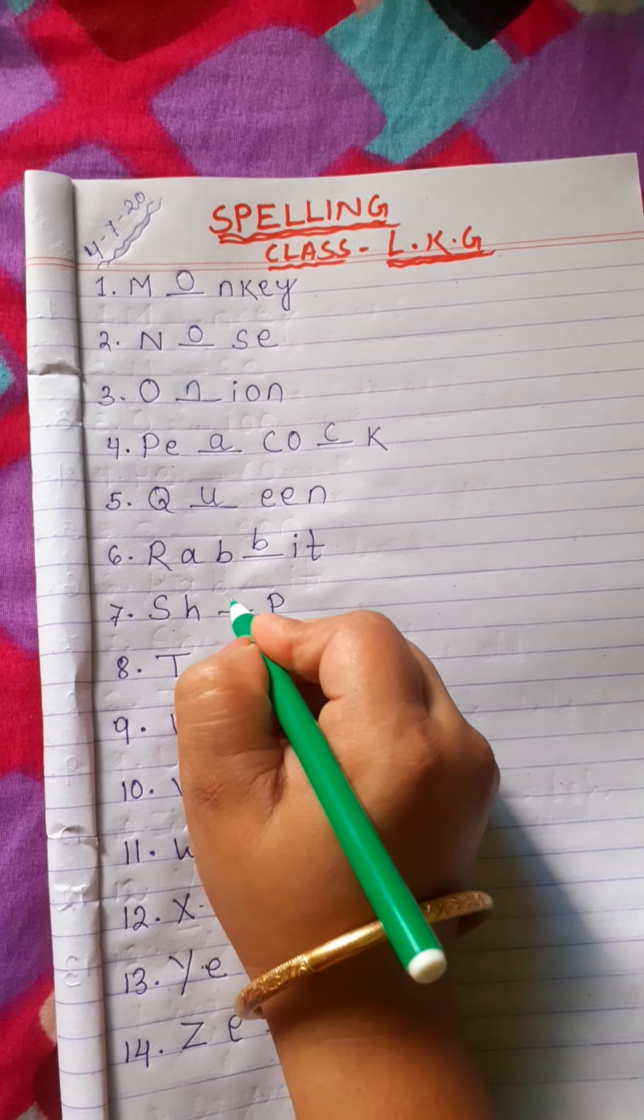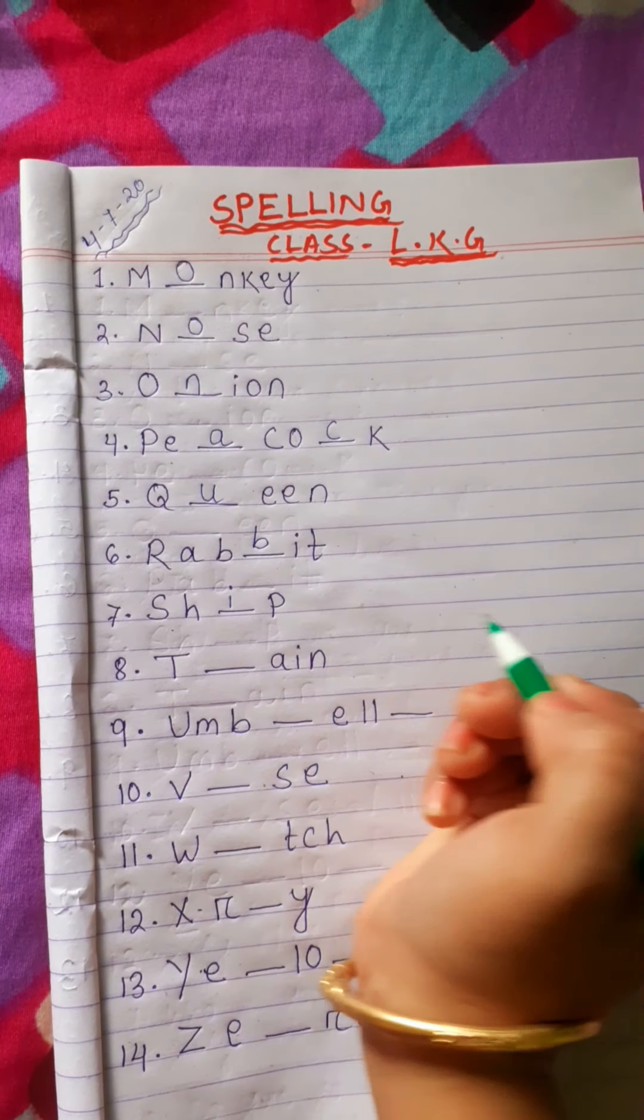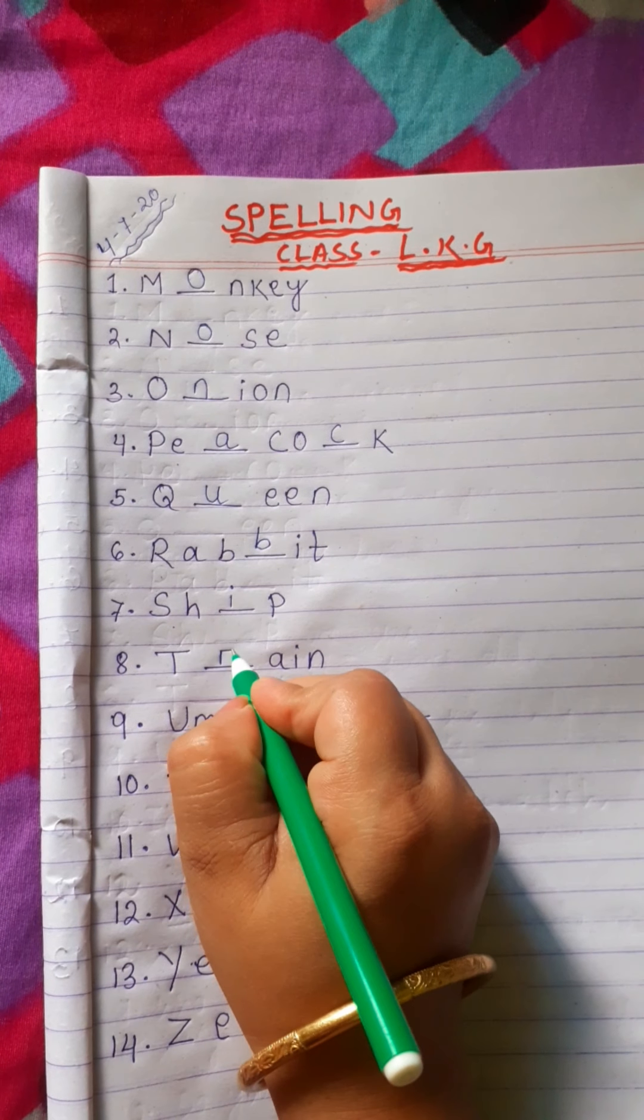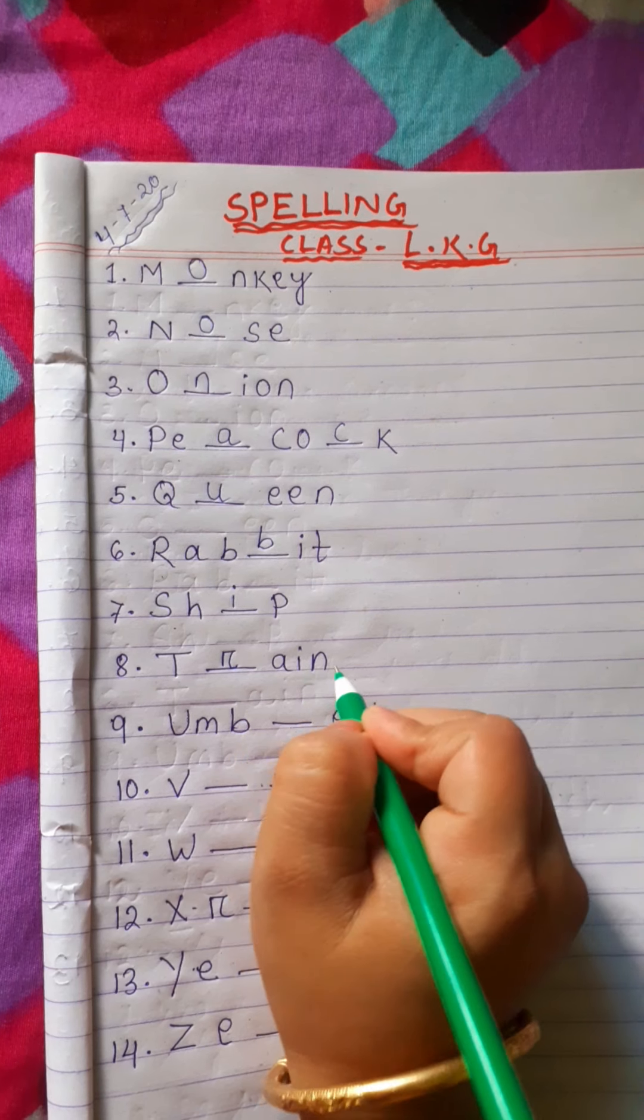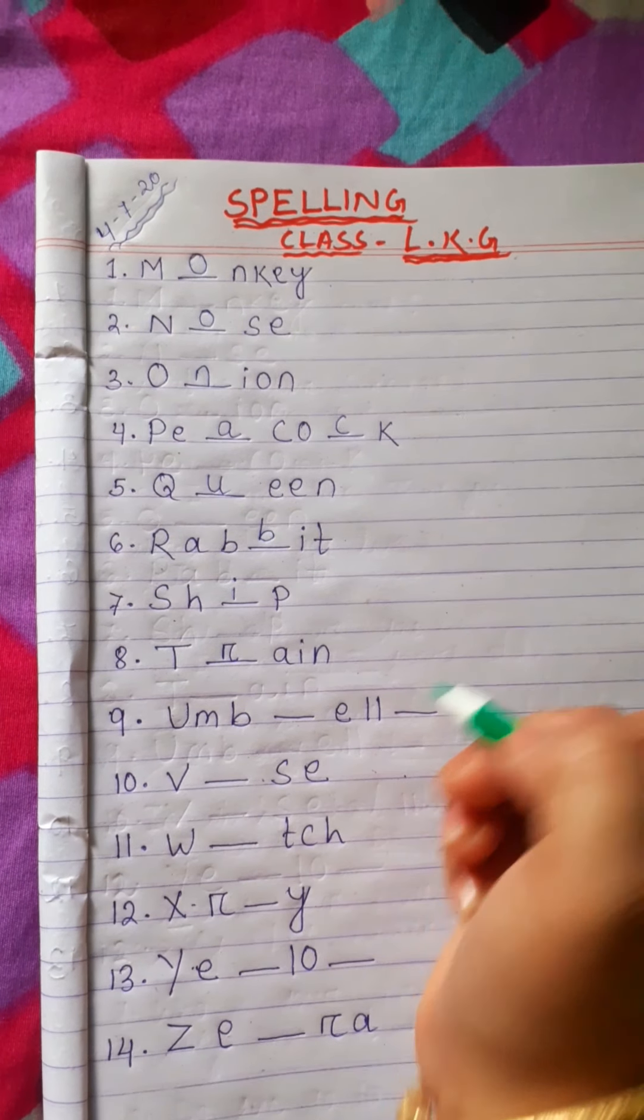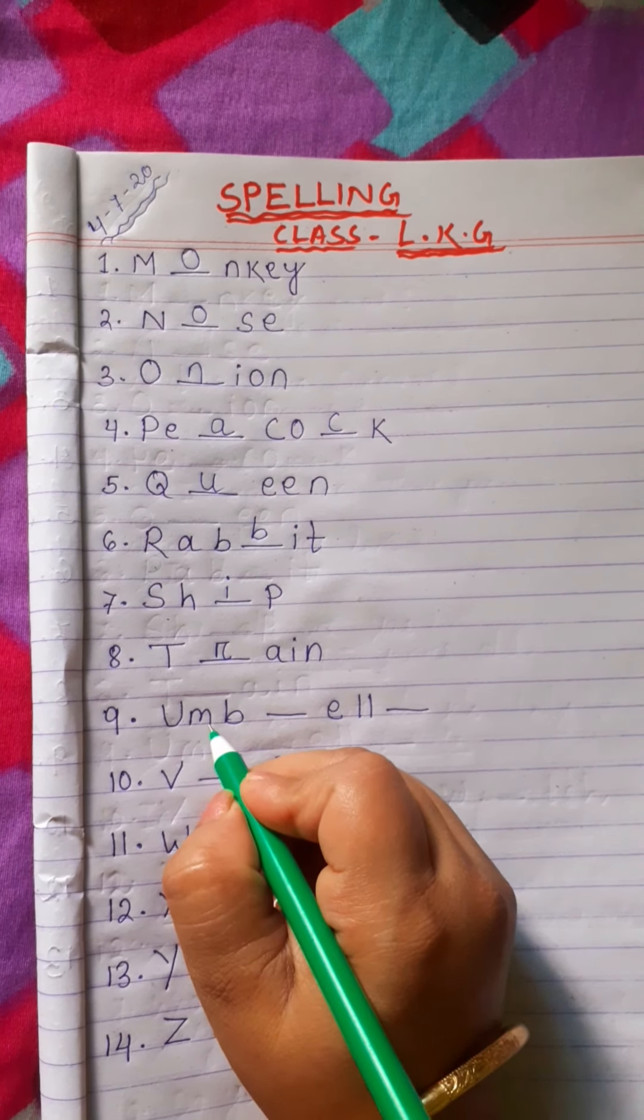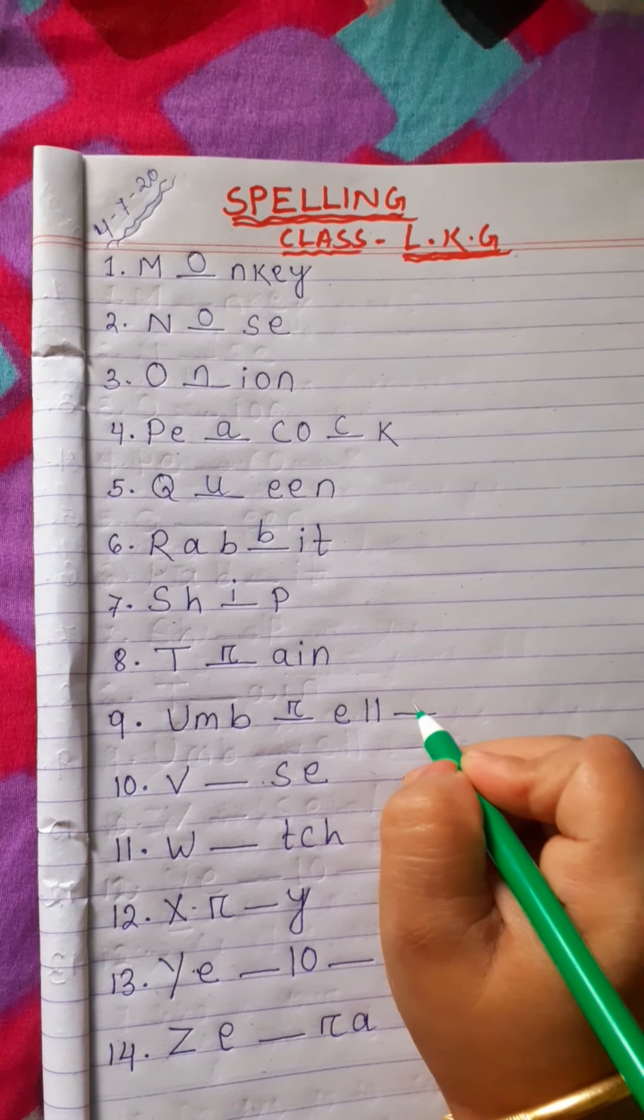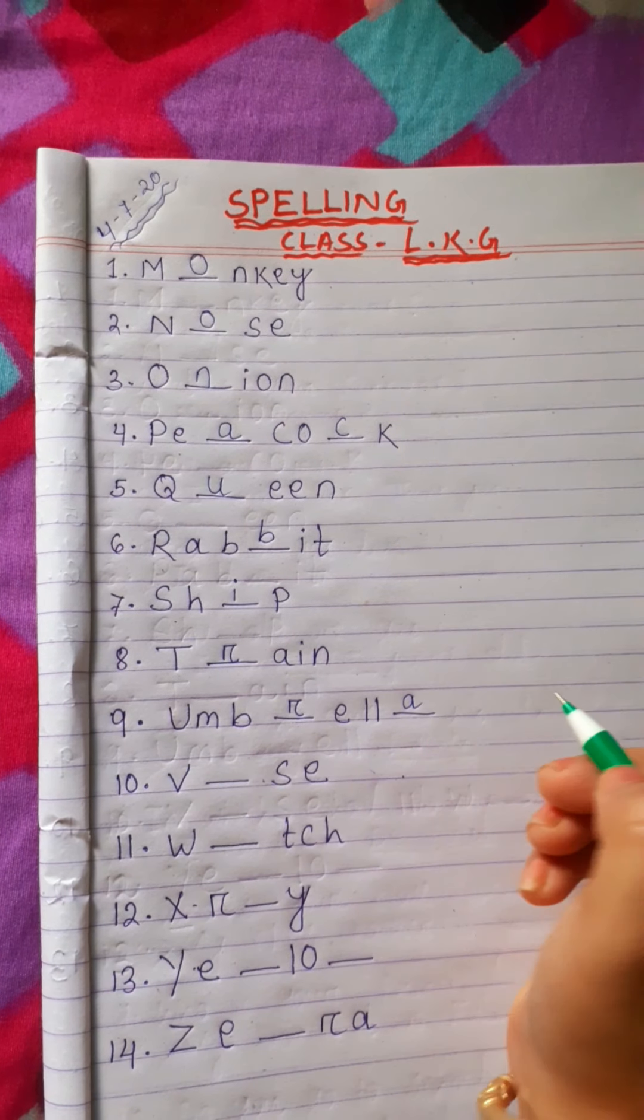S, H, I, P, Ship. T, R, A, I, N, Train. U, M, B, R, E, L, L, A, Umbrella.